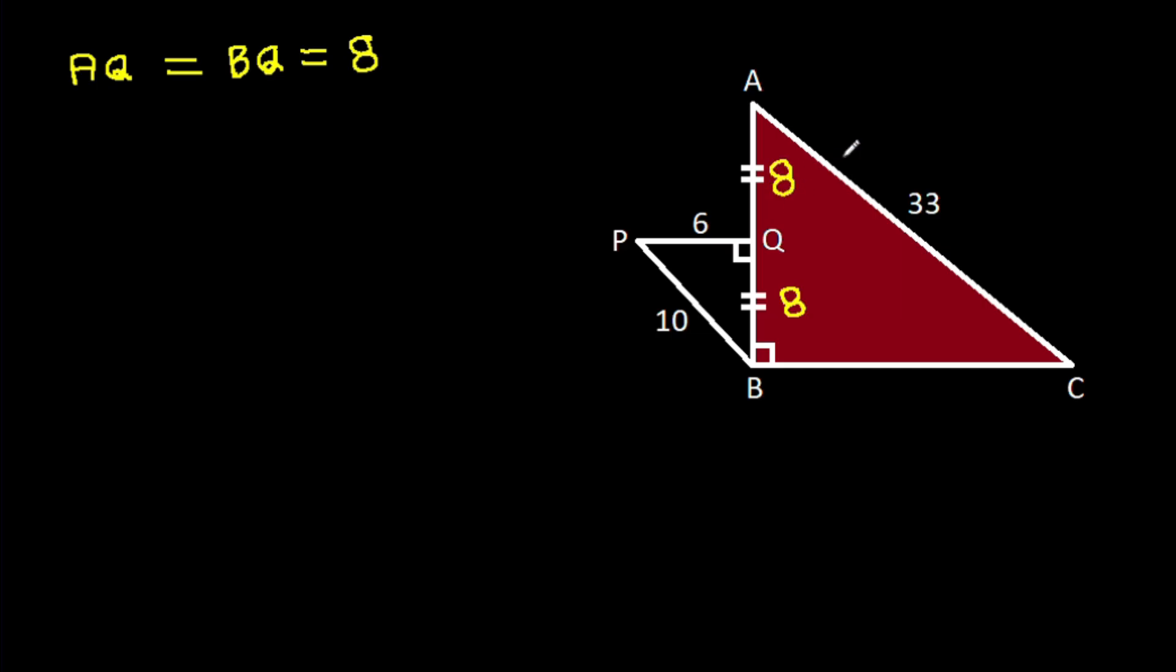And in triangle ABC, BC² will be AC² minus AB² by Pythagoras theorem.